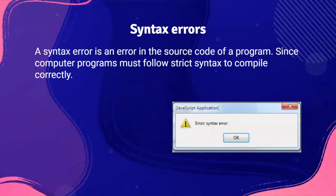When a program is being interpreted, the interpreter performs the actions specified by each statement until a syntax error is found. The programmer is then alerted to the place in the program where the error was found. The error is corrected by the programmer and interpretation continues until the next error is found or the task is completed.